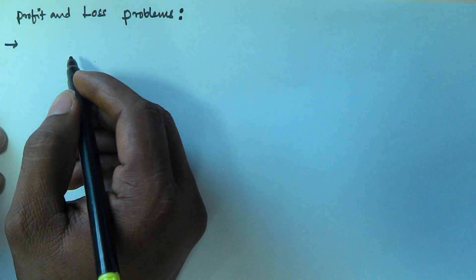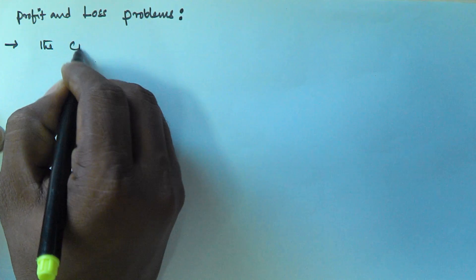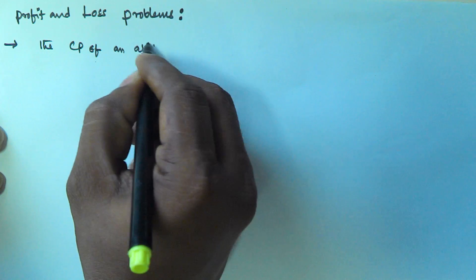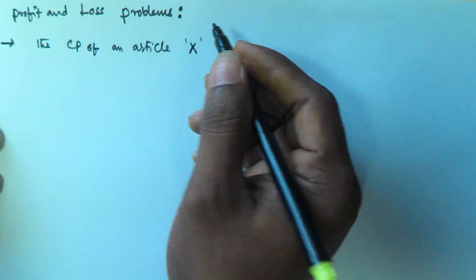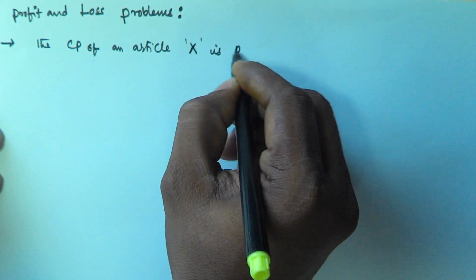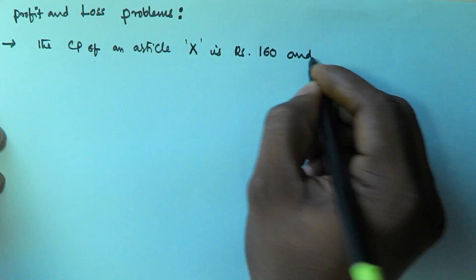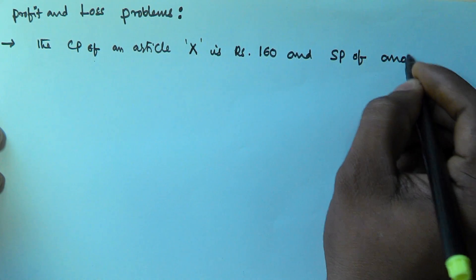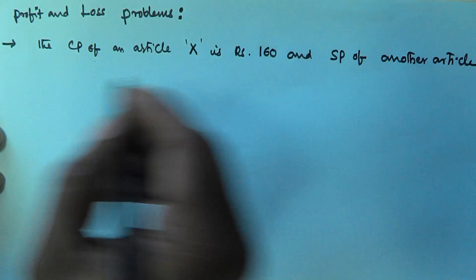Hello friends, in this video we will see another problem related to profit and loss. The problem is: the cost price of an article X is rupees 160, and the selling price of another article Y is...